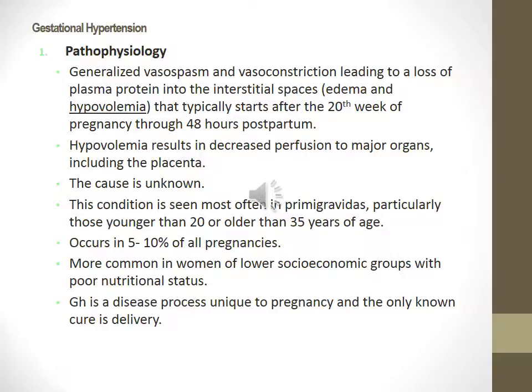Pathophysiology of gestational hypertension: there is a generalized vasospasm and vasoconstriction leading to loss of plasma protein in the interstitial space, causing edema and hypovolemia. This typically starts after the 20th week of pregnancy through 48 hours postpartum. Hypovolemia results in decreased perfusion to major organs including the placenta. The cause is unknown. This condition is seen most often in primigravidas, particularly those younger than 20 or older than 35 years of age, occurring in 5-10% of all pregnancies and more commonly in women of lower socioeconomic groups with poor nutritional status. Gestational hypertension is unique to pregnancy and the only known cure is delivery.